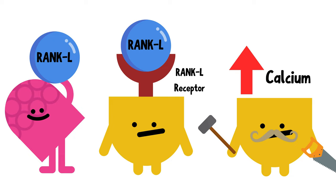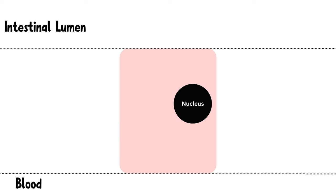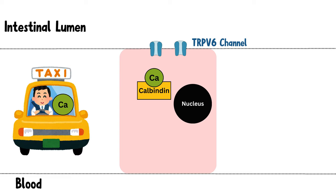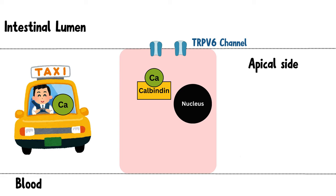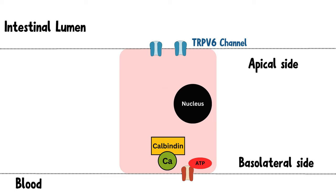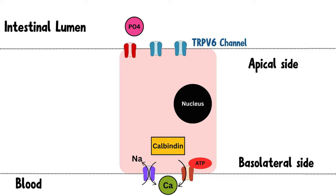The active form of Vitamin D also exerts its effects at the level of the intestines. In intestinal epithelial cells, calcitriol stimulates the expression of TRPV6, an ion channel that facilitates passive transport of calcium from the intestinal lumen into the cell. Once inside, calcium binds to calbindin, a protein that transports calcium from the luminal side to the basolateral side of the cell. Calcium is then actively transported into the blood via the calcium ATPase pump or the sodium-calcium exchanger. Vitamin D also increases intestinal absorption of phosphate by promoting expression of sodium-phosphate co-transporters.